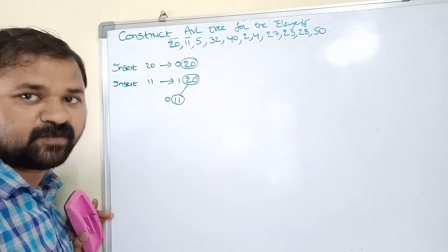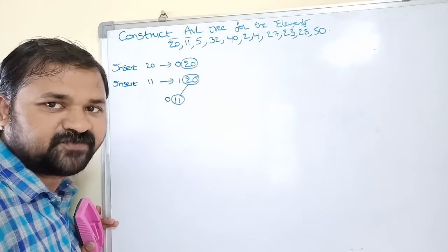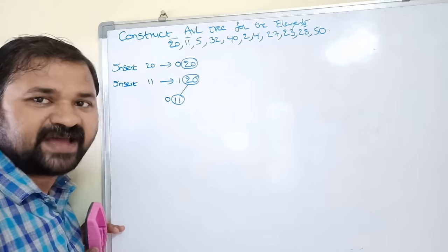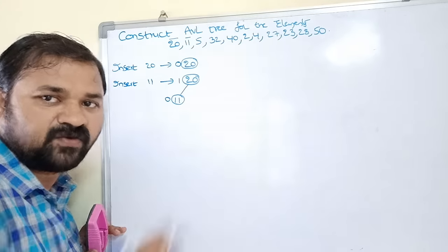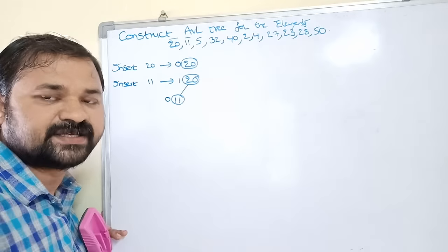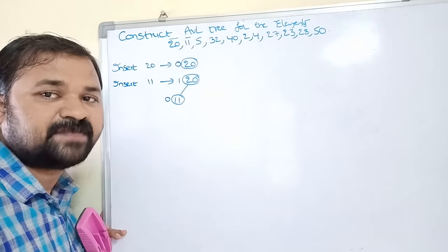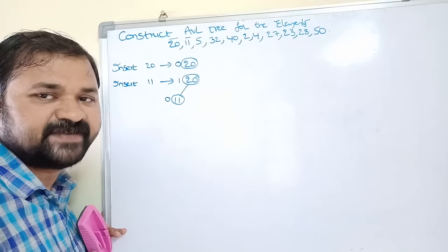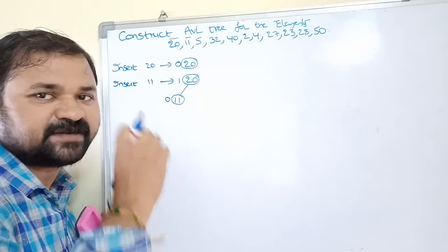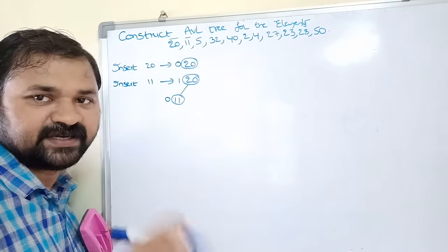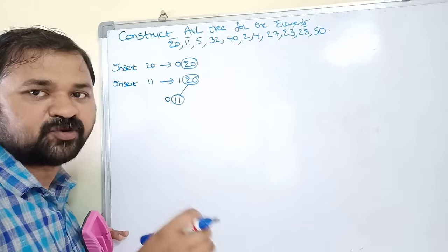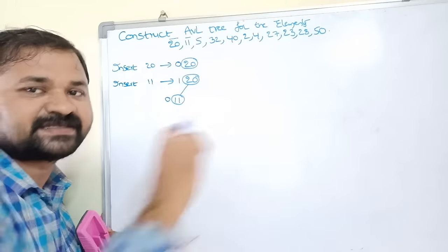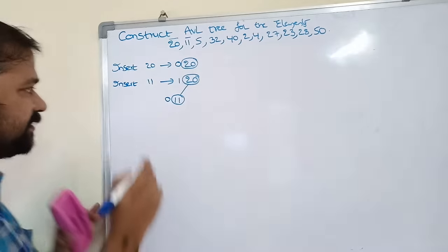So there is no problem here. We can say that a node is unbalanced if the balance factor is other than -1, 0, or 1. Then we have to perform a rotation in order to make the tree a balanced one.